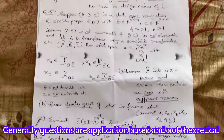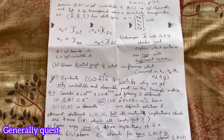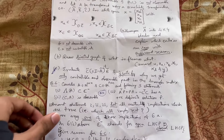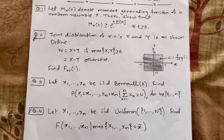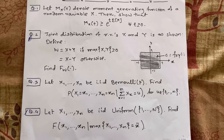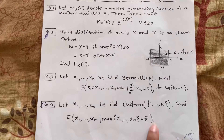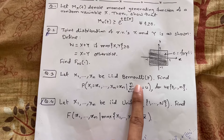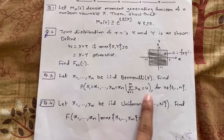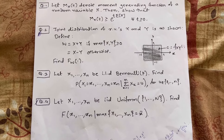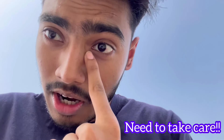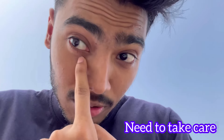यह JM का question था और यह probability का है — पता नहीं तुमको समझ में आया कि नहीं — Random Variable, Bernoulli। और यह देख रहे हो, आंक के नीचे क्यों circles हो गए हैं — कुछ ज्यादा ही tough है भाई। (This was the JM question and this is from Probability — don't know if you understood — Random Variables, Bernoulli distribution. And you can see why there are circles under the marks — it is really tough.)